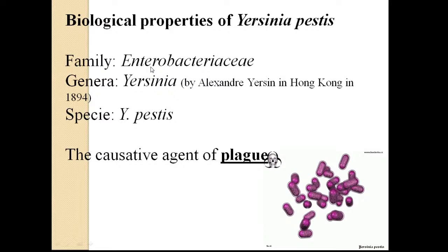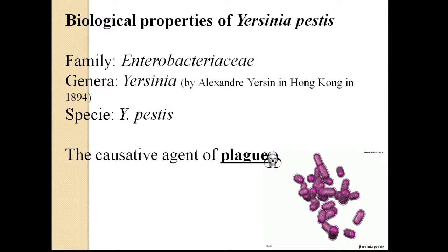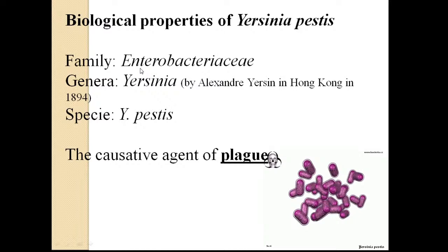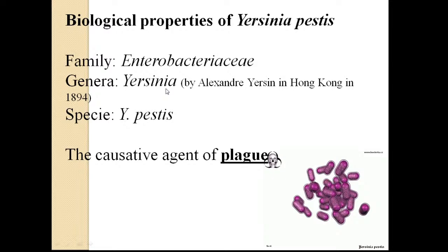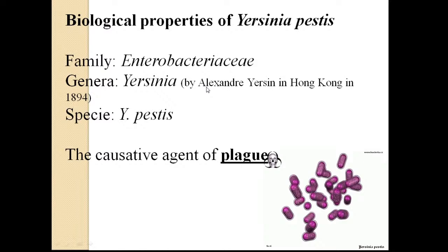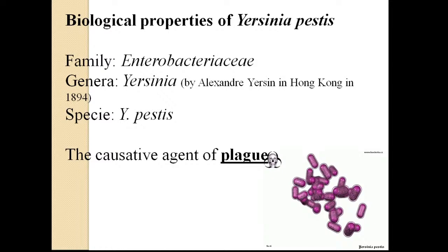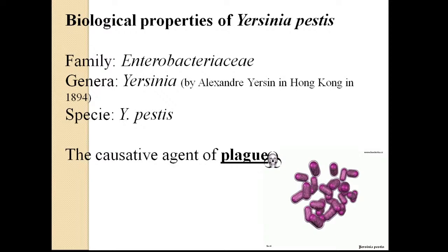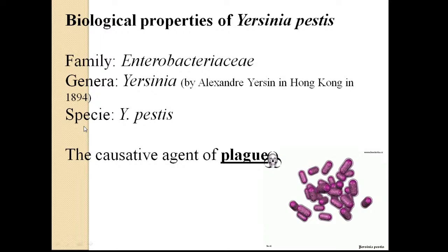All enterobacteria are gram-negative rod-shaped bacteria. We have already studied Escherichia, Klebsiella, Proteus, Shigella, and Salmonella. The genus is Yersinia, named in honor of bacteriologist Alexander Yersin who discovered and isolated this bacteria in Hong Kong in 1894.